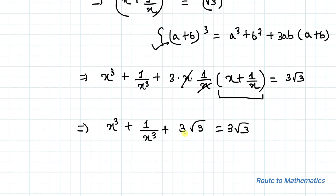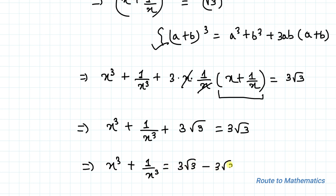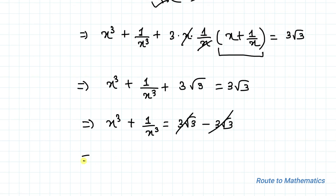Now by taking 3 root 3 to the right hand side, we have x cube plus 1 by x cube equals to 3 root 3 minus 3 root 3, which is nothing but 0. So this implies x cube plus 1 by x cube equals to 0.